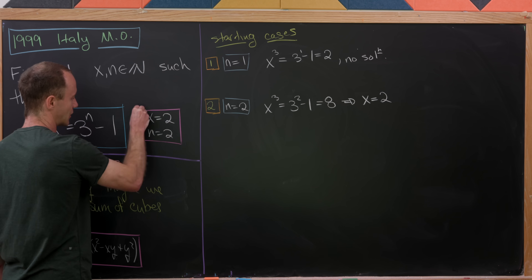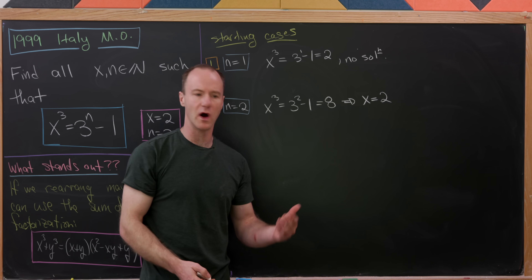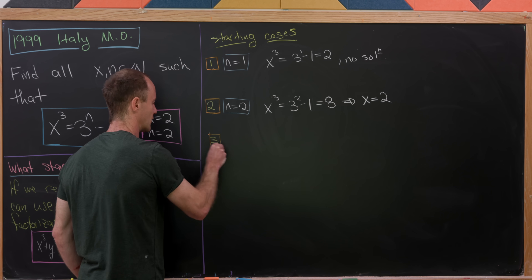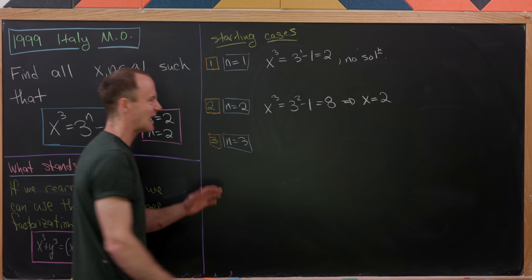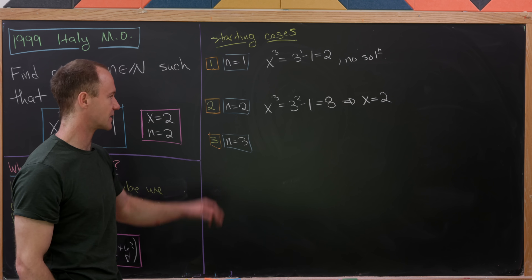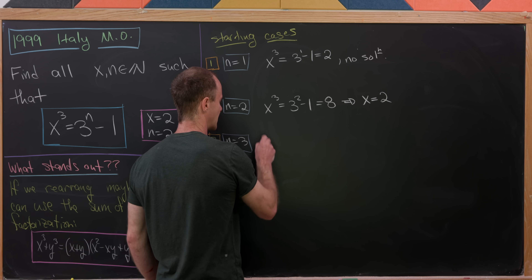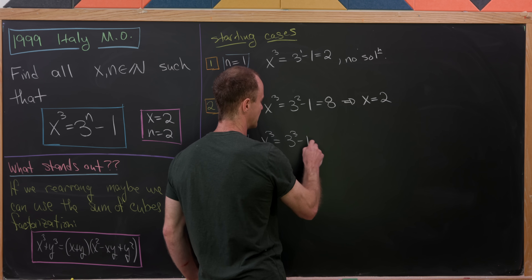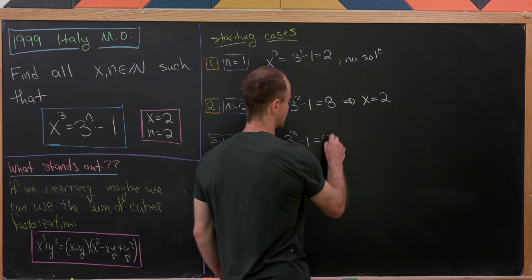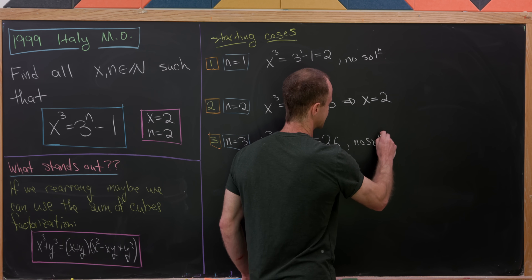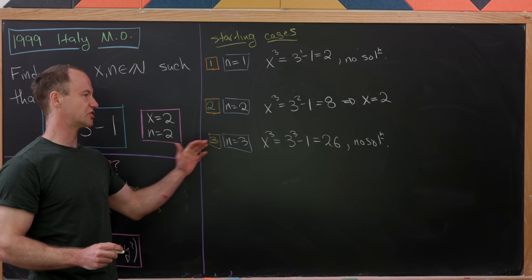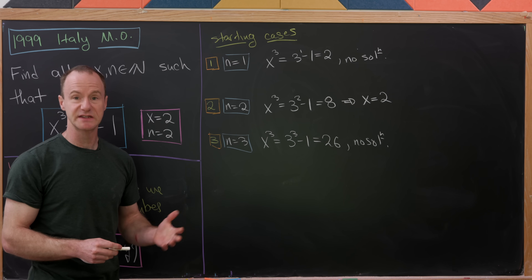Now let's see if there are more solutions. For n = 3: x³ = 3³ - 1 = 27 - 1 = 26. There's obviously no solution here either. Now that we've found one solution and played around with some calculations, let's move on to the general case.